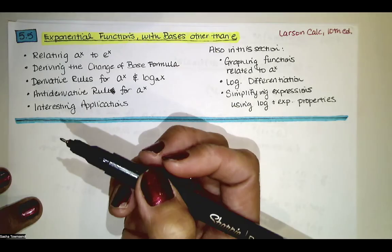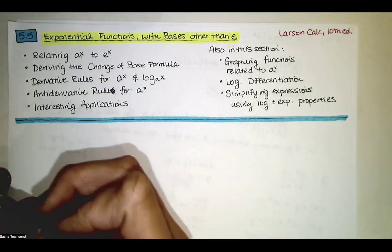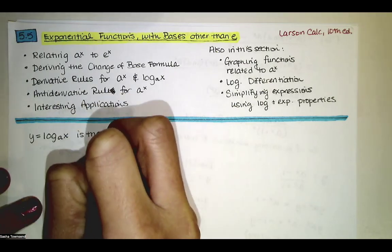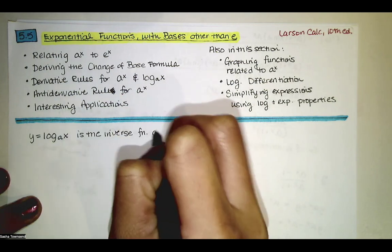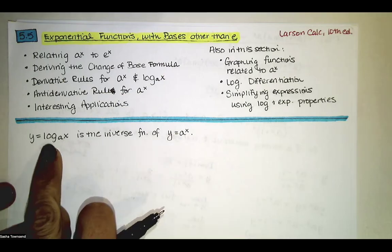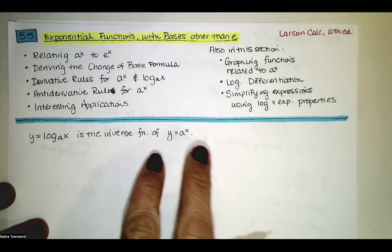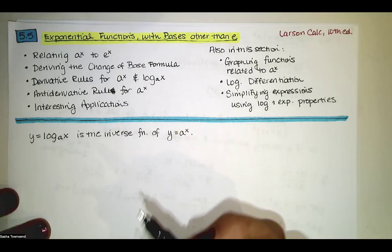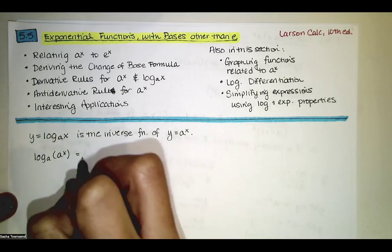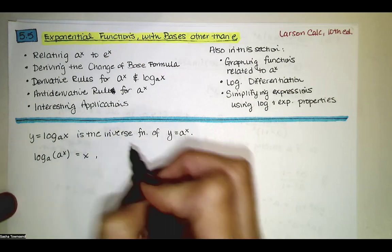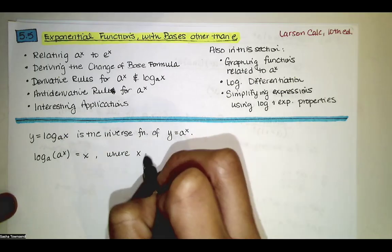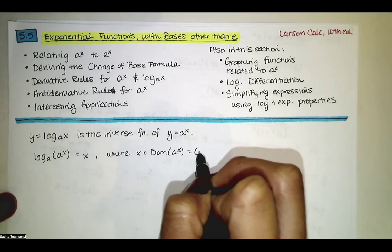The easiest way to relate a to the x to e to the x is to use the inverse property of logarithms. y equals log base a of x is the inverse function of y equals a to the x, so these two functions undo each other. Since they are inverse functions, if you compute log base a of a to the x, they undo each other and you just get x back, provided that x is in the domain of a to the x, which is defined for all real numbers.